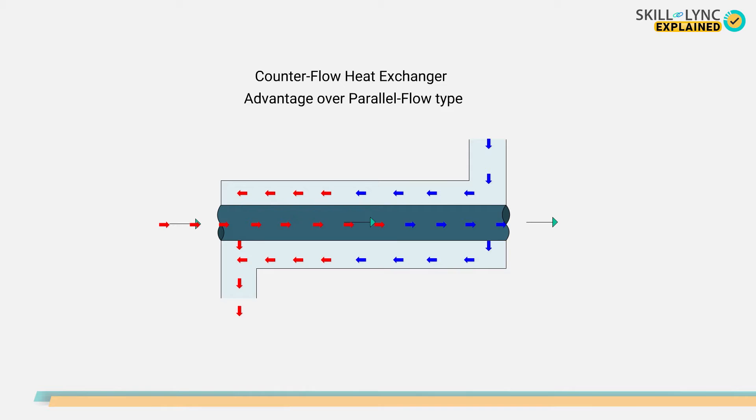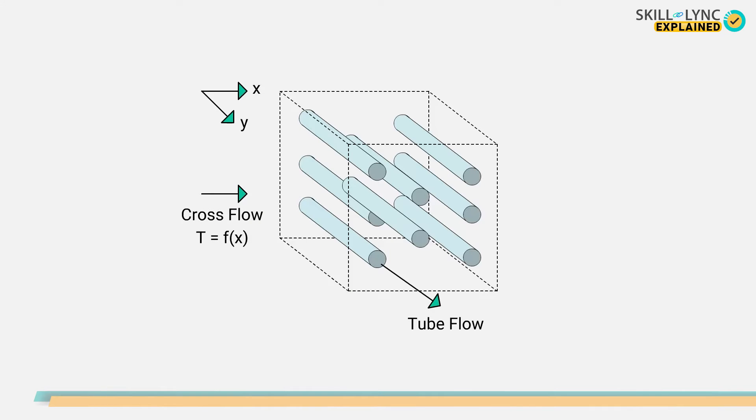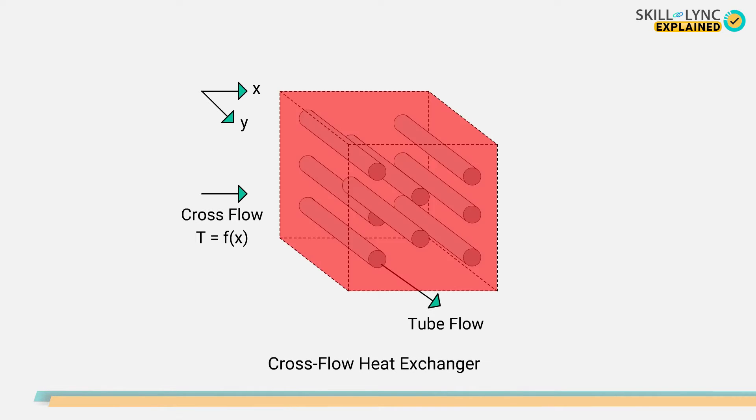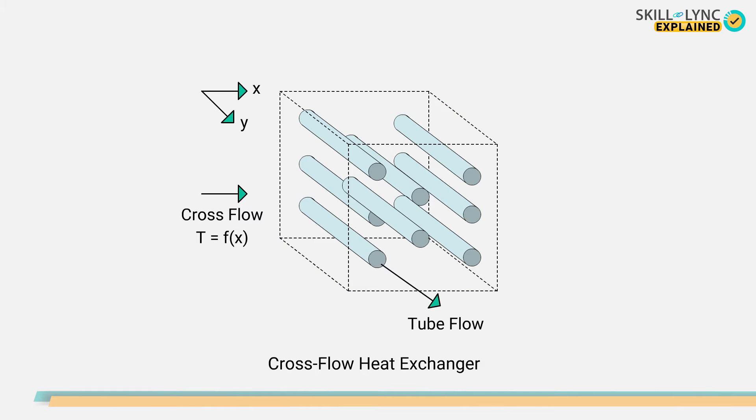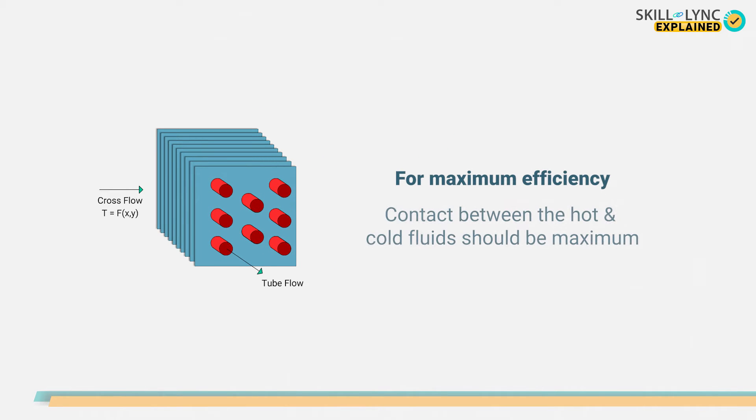Counter flow heat exchangers have one advantage over parallel flow type—that being the average temperature difference is higher, thus resulting in much more efficient heat transfer. The third type has the fluid flow in a perpendicular direction to each other. This type is called the cross flow heat exchanger. In such types, the flow of one fluid is in the x direction while the other fluid flows in the y direction. This type of heat exchanger can have fins to facilitate the flow in one direction while the tubes carry the other fluid.